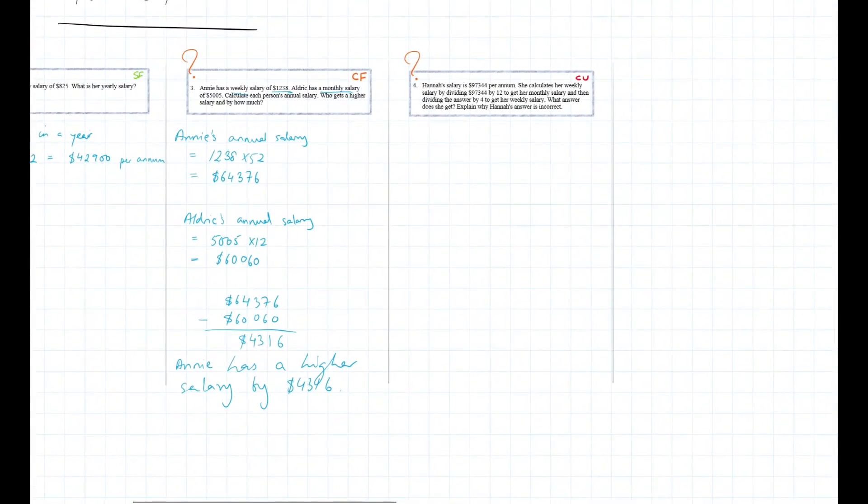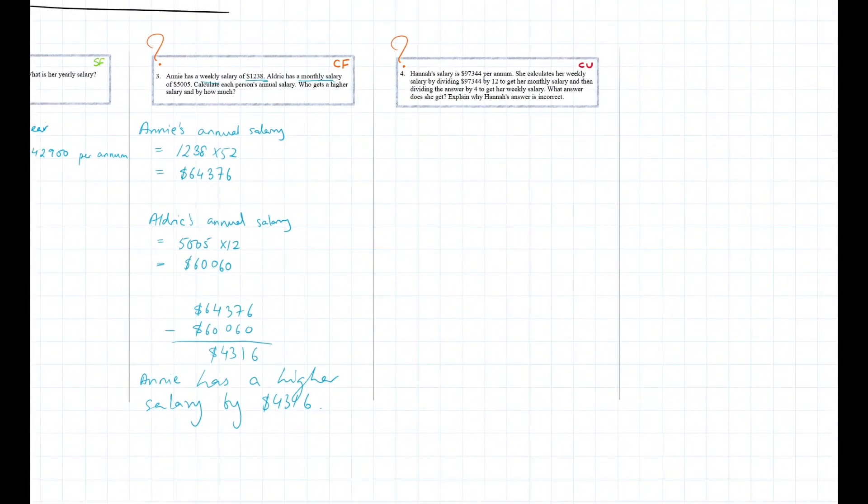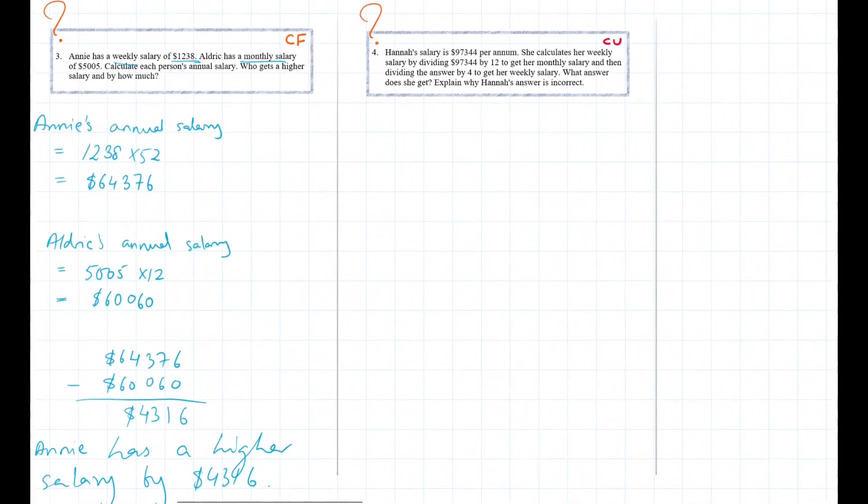Alright, now let's look at a possible complex unfamiliar question. So complex unfamiliar questions require you to use the knowledge that you've learned and apply it to an unfamiliar context. So let's look at this question. Hannah's salary is $97,344 per annum. She calculates her weekly salary by dividing $97,344 by 12 to get her monthly salary and then dividing the answer by 4 to get her weekly salary. What answer does she get? Explain why Hannah's answer is incorrect. Okay, so let's see what answer she gets first.